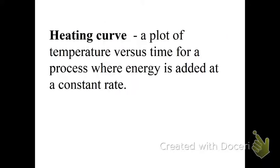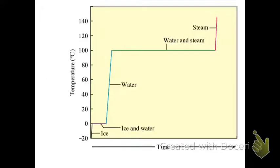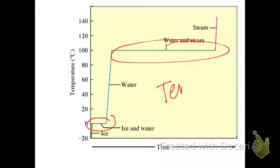Heating curve is the plot of the temperature versus time for a process where energy is added at a constant rate. You've seen that in Chem 1. When you're looking at these phase changes themselves, the temperature is constant. Temperature constant at phase change. You might want to write that down: at phase change.